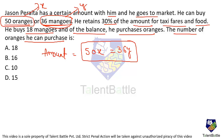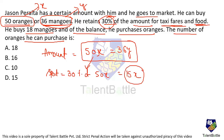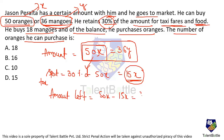On the way to the market, he spends 30% of the amount on taxi fares and food. Taking the amount as 50X, the amount spent is 30% of 50X, which is 15X. So the amount left is 50X minus 15X, which equals 35X rupees.